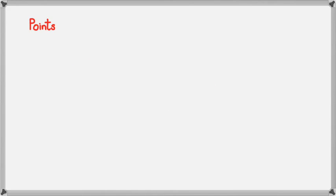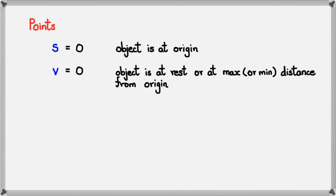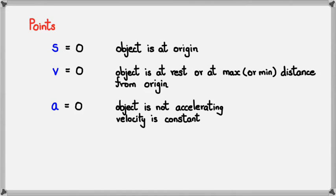The next set of pointers: when s equals 0, the object is at the origin. When velocity equals 0, there are three possibilities — the object is at rest, or it's at a maximum or minimum distance from the origin. When acceleration equals 0, the object is not accelerating, meaning velocity is constant and not increasing.